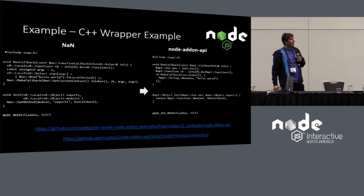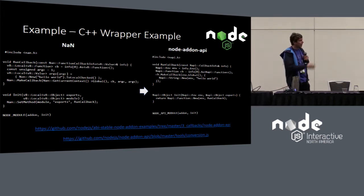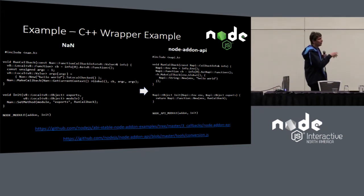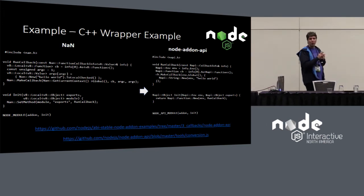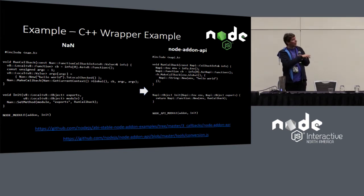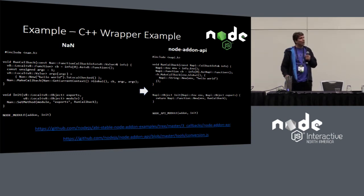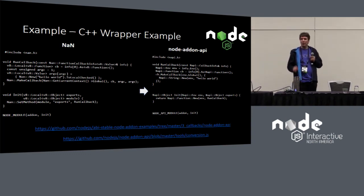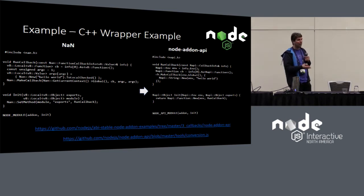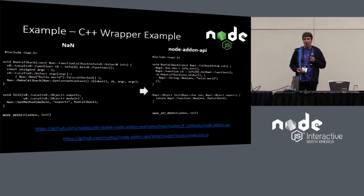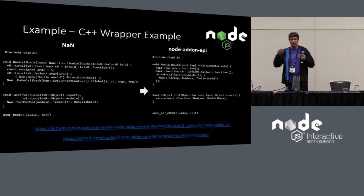To help you move from NAN, there's a converter tool. You can run it on your NAN module and it'll try to convert all the calls into the NAPI versions. It's not complete — it probably does about 80% of the transition for you — but it's a good way to start. You can then go through and fix up the remaining parts to fully convert your module.